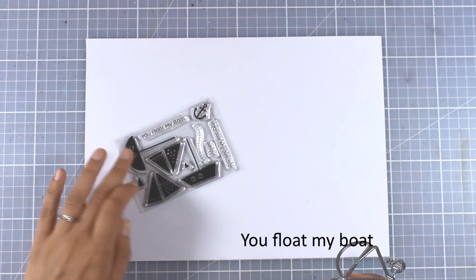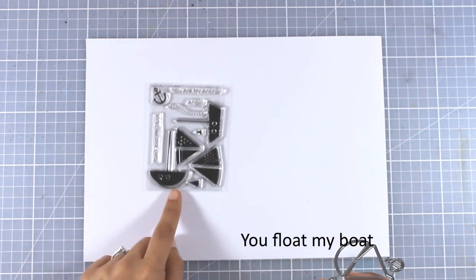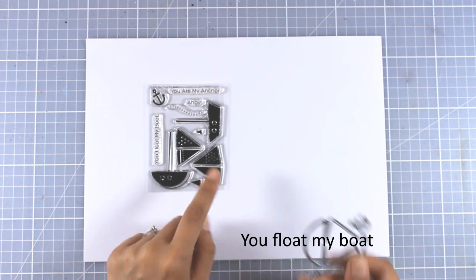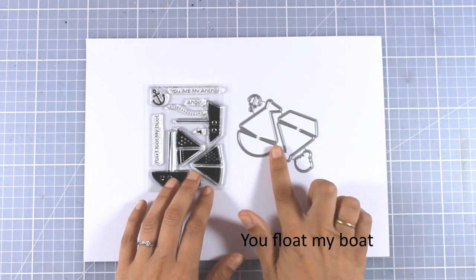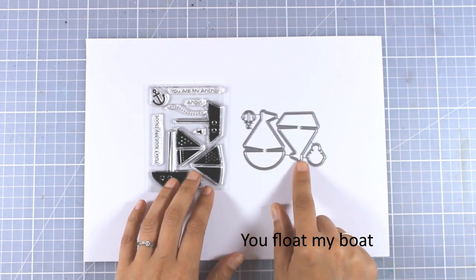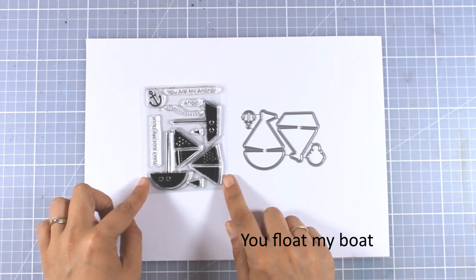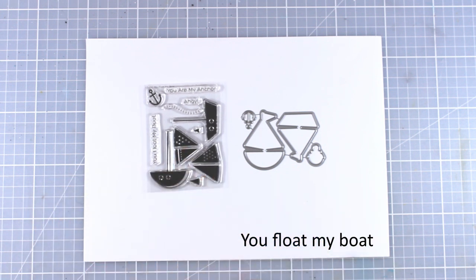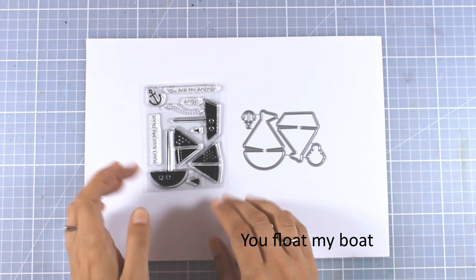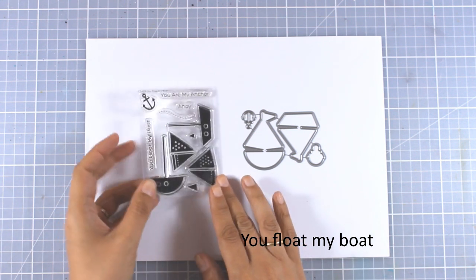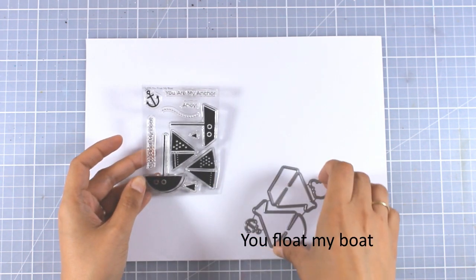Let's move on to the 4x3 stamp sets. This is called You Float My Boat, and as you can see it comes with two adorable little boats that you can also cut out with the matching dies. It also includes sentiments to match that nautical theme, such as you float my boat, you are my anchor, and ahoy.